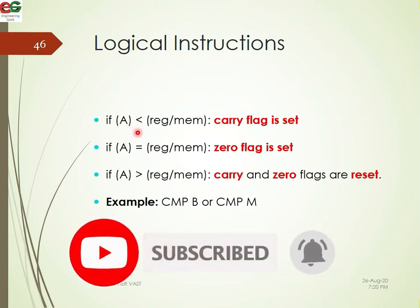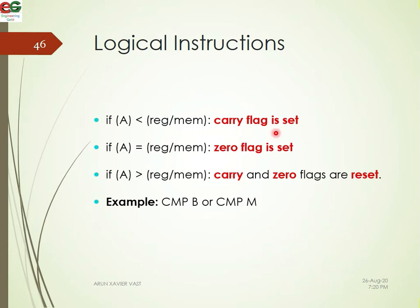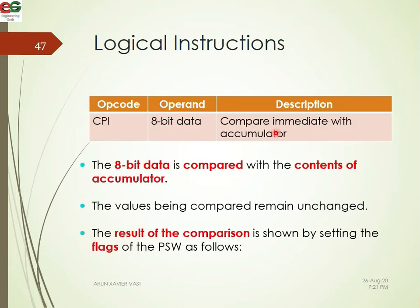If the accumulator value is less than the register or memory value, the carry flag is set. If the accumulator value equals the register value, the zero flag is set. If the accumulator value is greater, the carry and zero flags are reset. CPI is compare immediate with the accumulator.